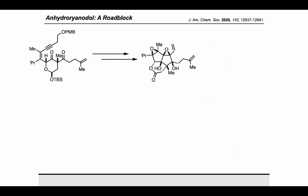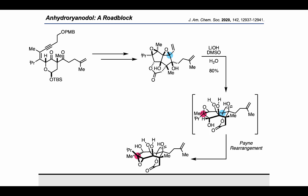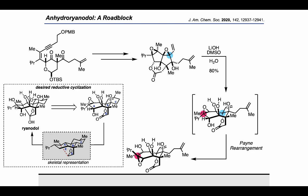Here the authors reported hitting a roadblock. They were able to advance their previous intermediate to a cyclized bisepoxide, but treatment with lithium hydroxide and DMSO led not only to hydrolysis of the lactone and attack of the resulting carboxylate at the stereocenter marked in blue, but also to an undesired payne rearrangement at the stereocenter marked in pink. This meant the authors would not be able to apply the desired reductive cyclization previously used by de Longchamp and Reisman to close the E ring of ryanodol.